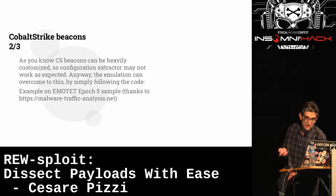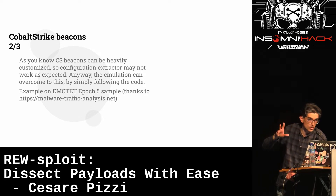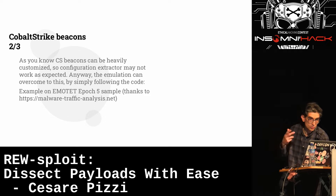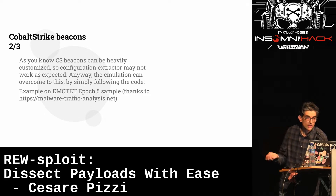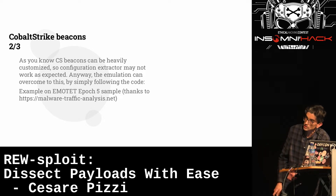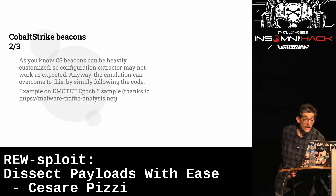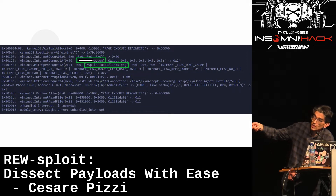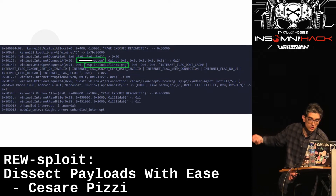Cobalt Strike can be used with its out-of-the-box configuration, which is fairly well-known and can be decrypted statically. But it can also be heavily customized — in that case static tools won't work and configuration extraction fails. Emulation can help here because it doesn't rely on static patterns — it just unrolls the code and reads it. I'm showing an example with a NameOn epoch 5 sample from Malware Traffic Analysis — by emulating the code you can get C2 info, connection parameters, and all API calls from the beacon.